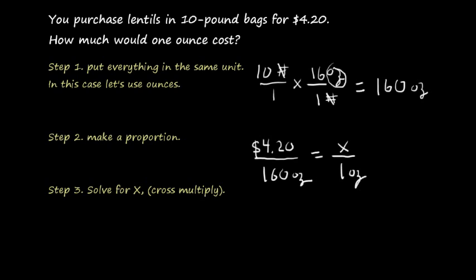Consider cross multiplying. We'd have 160X is equal to 420 times one, which of course is just going to go to 420. Divide both sides by 160 by 160 and we'll wind up with 0.02625, and I'll stop there.